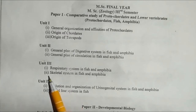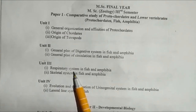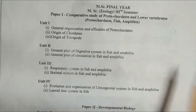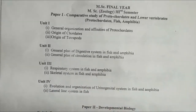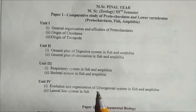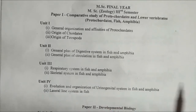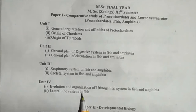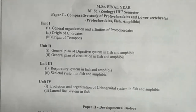Unit Third also has two topics: the respiratory system and skeletal system in fish and amphibia. Unit Fourth covers evolution and organization of the urinogenital system in fish and amphibia, and the second topic is the lateral line system in fish.